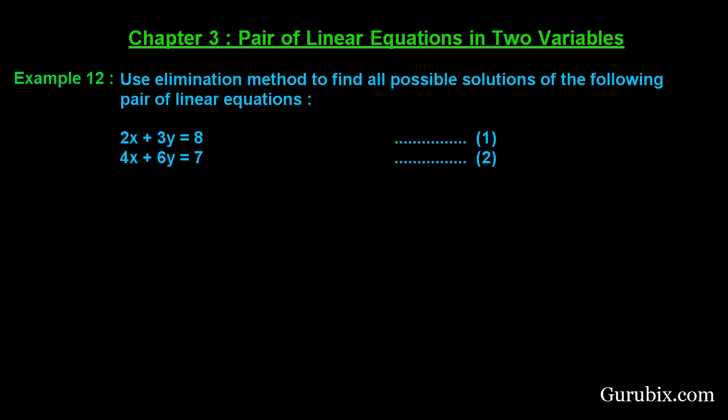We have two linear equations in two variables. The first one is 2x + 3y = 8 and the second is 4x + 6y = 7. We have to solve these two equations for x and y using elimination method.